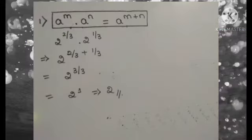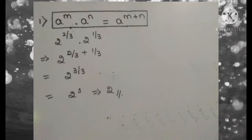Now let's see the example for the first law. Question 1: 2 raised to 2/3 into 2 raised to 1/3 equals 2 raised to (2/3 plus 1/3) equals 2 raised to 3/3, which equals 2 raised to 1, which is 2.